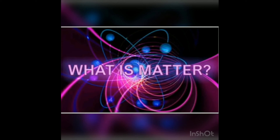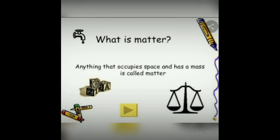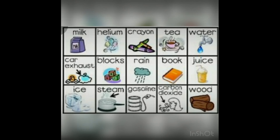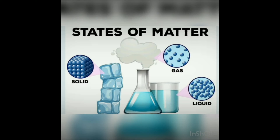One particular definition for the term matter is: anything in this world that occupies space and has mass is considered as matter. Examples include metals, non-metals, water, oxygen, and even our body — all are examples of matter.